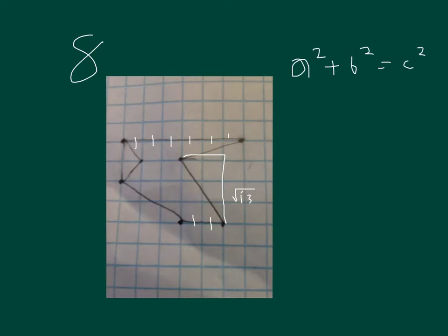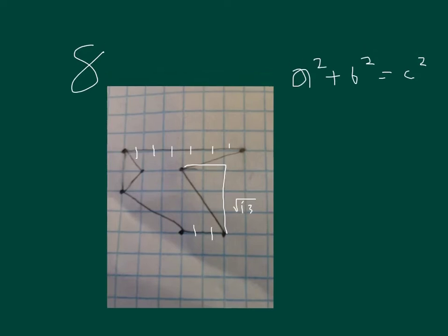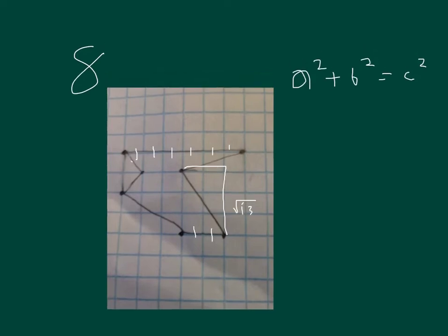Okay, so let's find the other side. These two are the same, so we only have to do it once. So that's 1 by 1. So 1 squared plus 1 squared equals 2. So this is the square root of 2, and then this is also the square root of 2.